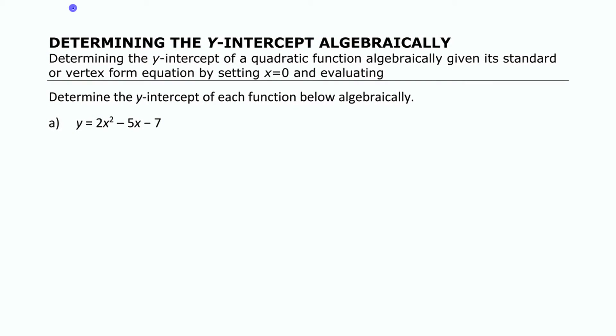To find the y-intercept algebraically, we're going to substitute x equals 0 and then evaluate what y is. Because if you think about a graph, any function for that matter, the y-intercept along there is where x is 0. So if we take this thing now and substitute 0 in for x and work it out, we will find what the y-intercept is.